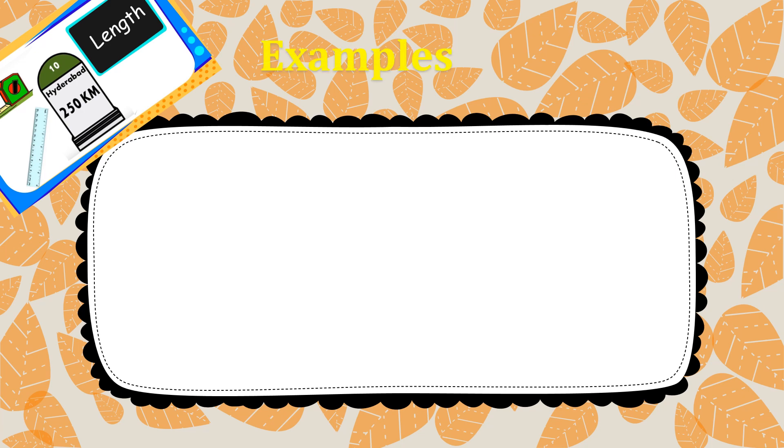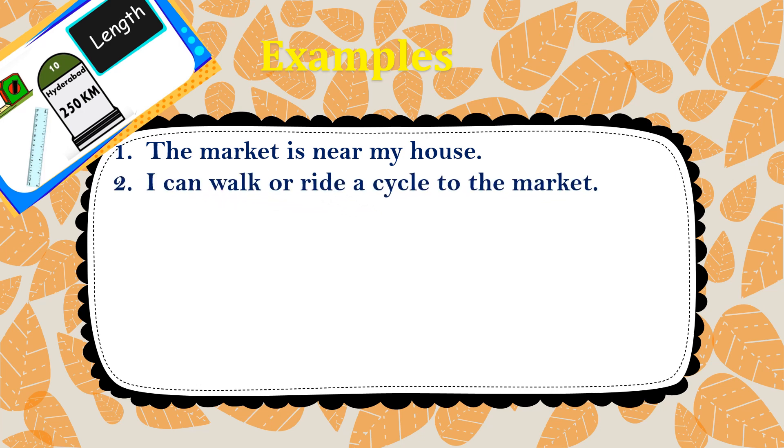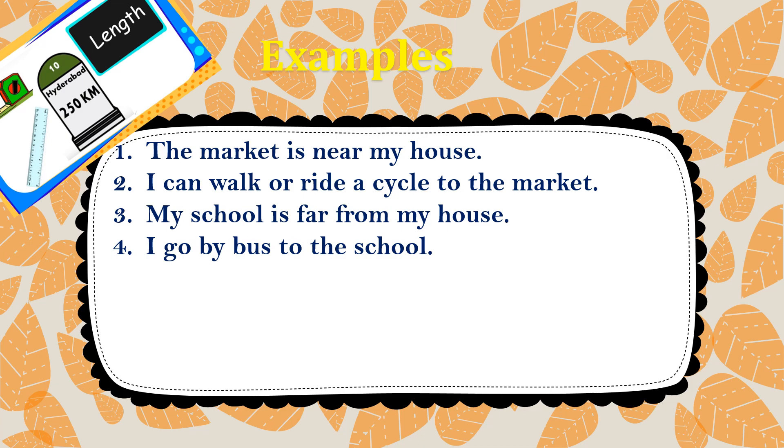Now let's see some examples. The market is near my house. This shows how far. I can walk or ride a cycle to the market. My school is far from my house. I go by bus to the school. All these examples show the distance, means the measurement of distance, means how far the school is from the house.